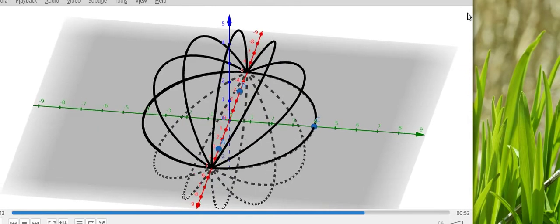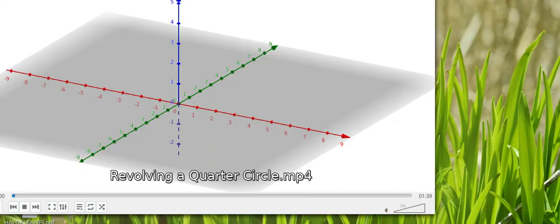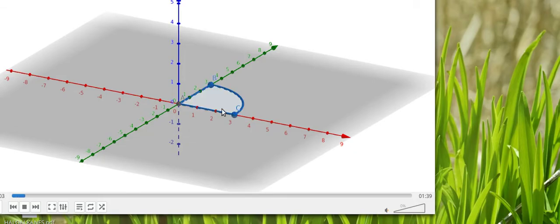Okay. Now, that's enough. Now, I will show you another thing. That is revolving a quarter circle. Now, look at this. Red is the x-axis, y-axis, and the blue is the z-axis. So what I did is, I took a quarter circle. I think you can see that circle.